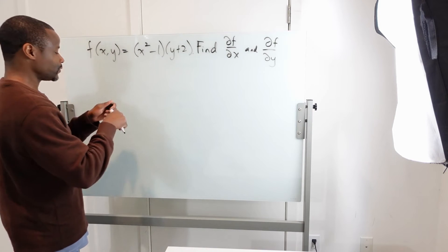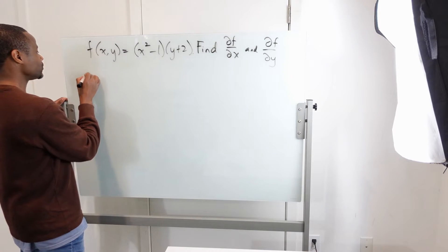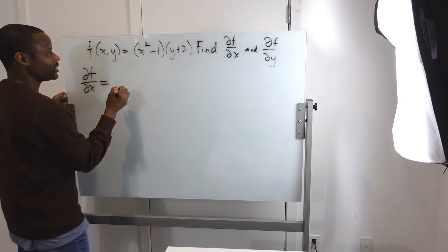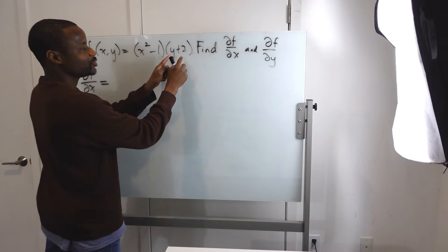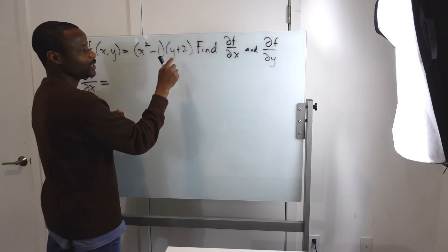Keep in mind, partial derivative just means we're considering only one given variable. So the partial derivative of f with respect to x is going to be—now, for x,